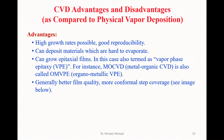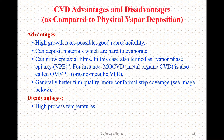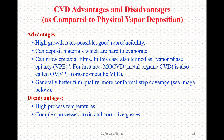Generally, CVD provides better film quality and more conformal step coverage. Disadvantages of this technique include high process temperatures — normally you go beyond 1200 degrees centigrade, particularly in the case of boron nitride thin films. It is a somewhat complex process in which we normally utilize toxic and corrosive gases, an example being ammonia, which we utilize for the growth of boron nitride nanostructures.